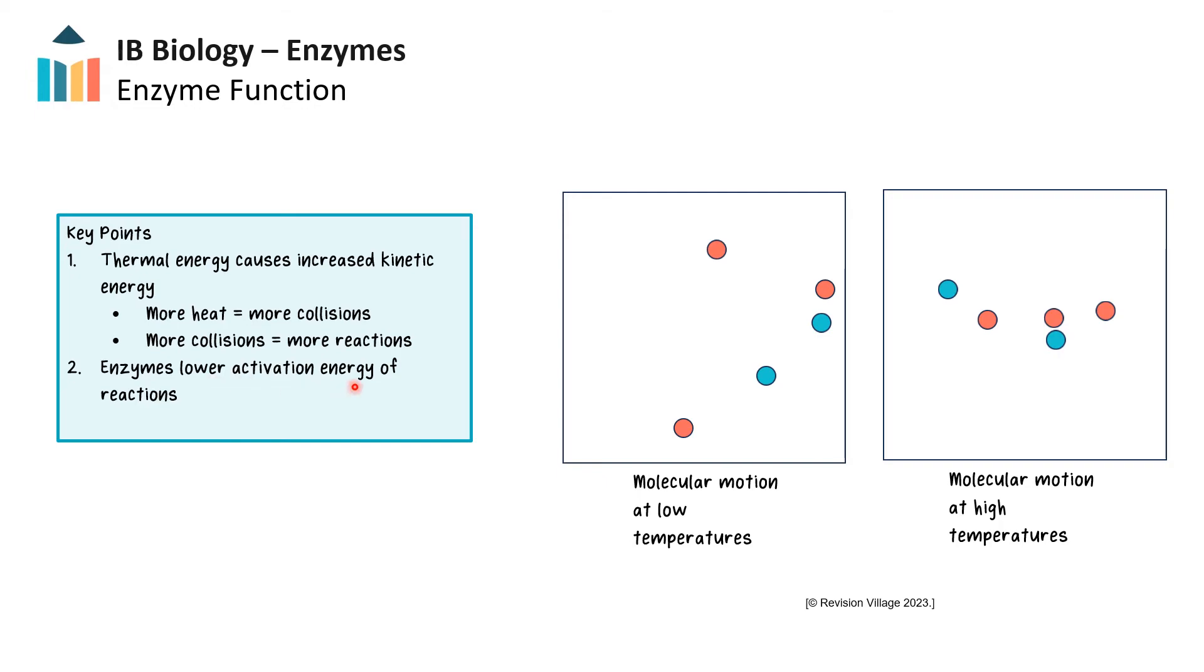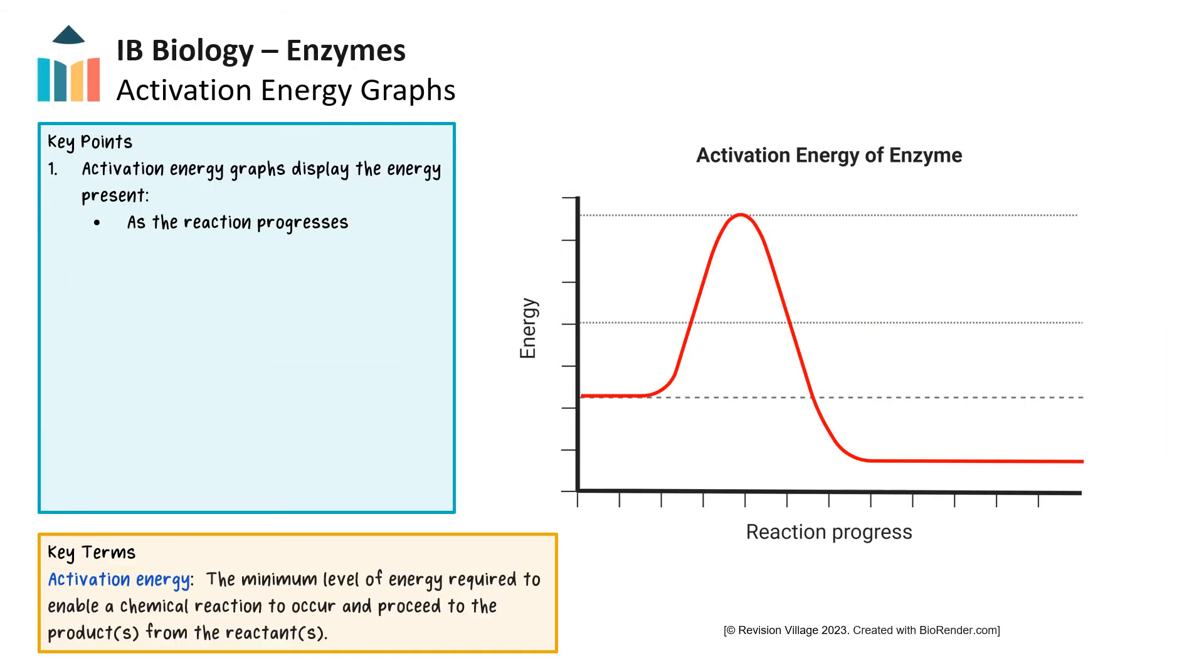This lowers the activation energy of reactions and makes reactions more likely to occur. This means living things spend less energy maintaining a high internal heat environment or maintaining specific conditions, while also having enough chemical reactions to keep the organism alive. Now we have seen how enzymes lower the energy needed for chemical reactions. Let's see how we can display the information in an activation energy graph.